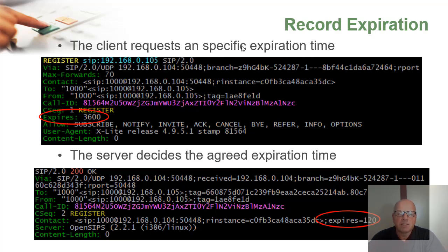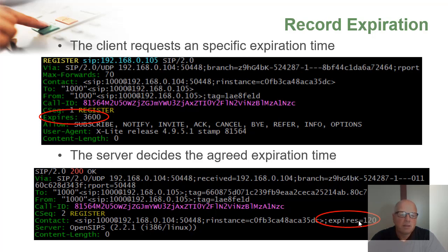In a registration, the client requests a specific expiration time in the Expires header — in this case, the client is requesting 3600 seconds. The server then decides the agreed expiration time: in the 200 OK contact, the server informs the client that the expiration time will not be 3600 but 120. So in 120 seconds, the client should send another REGISTER. Usually the client will send a new registration at the mid-life of the registration period.